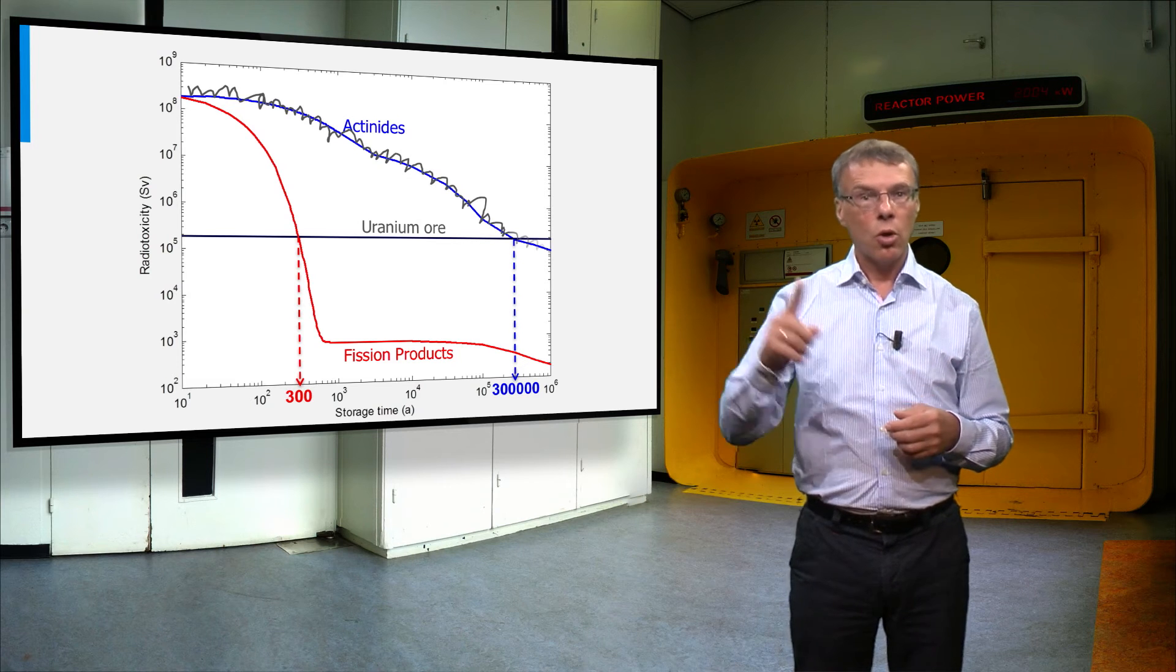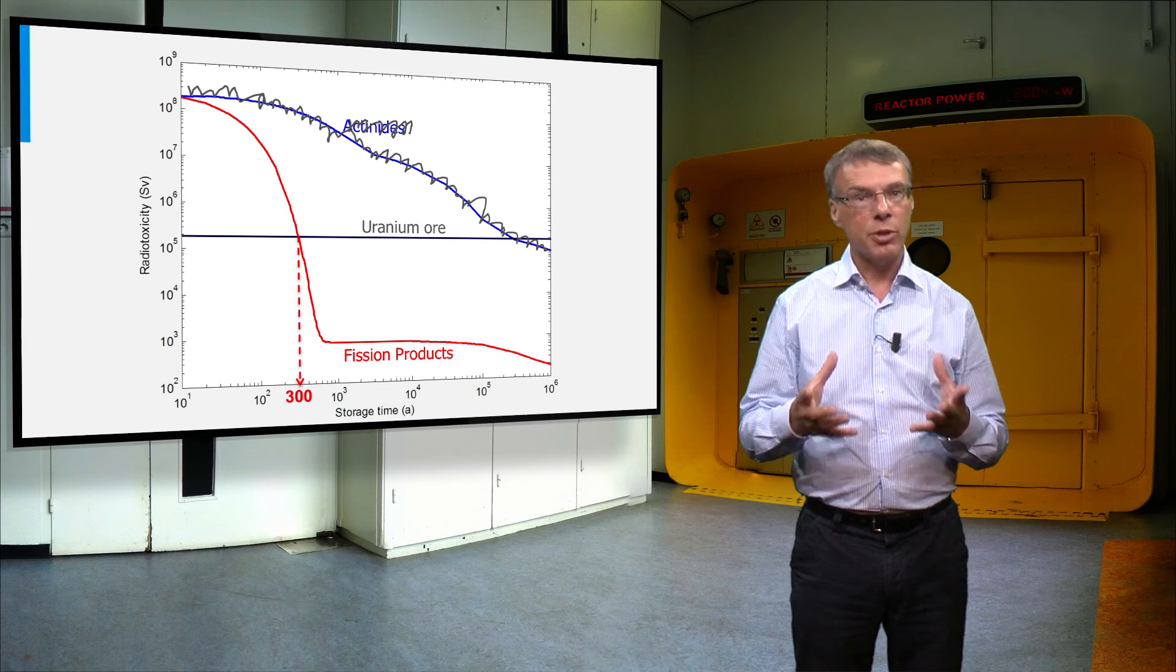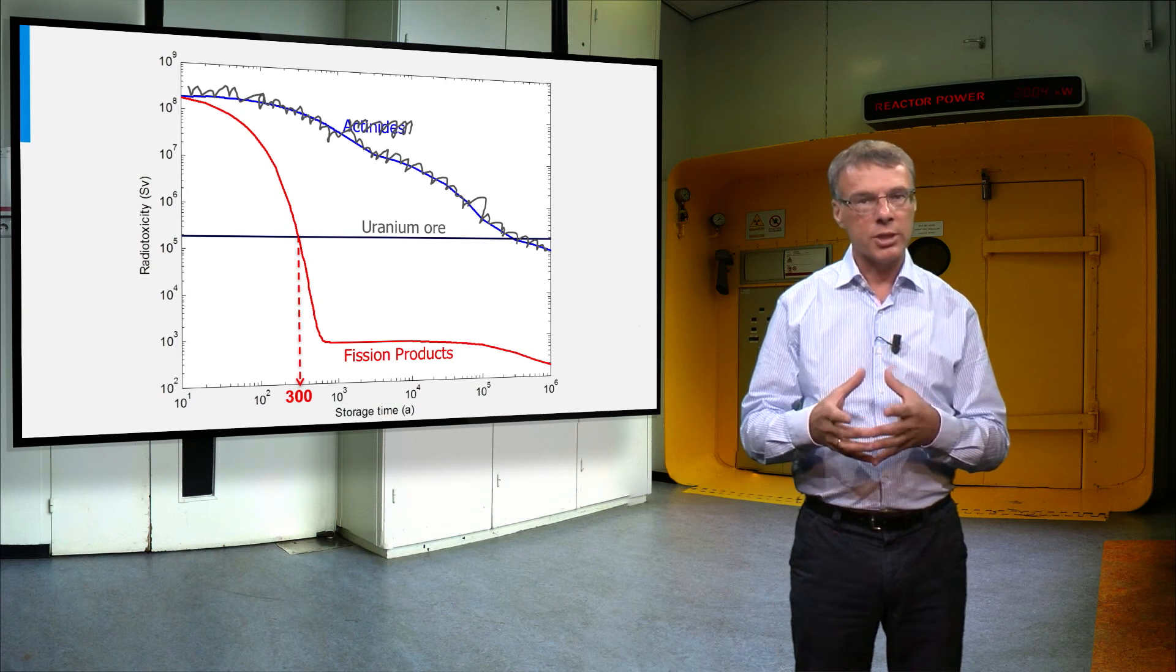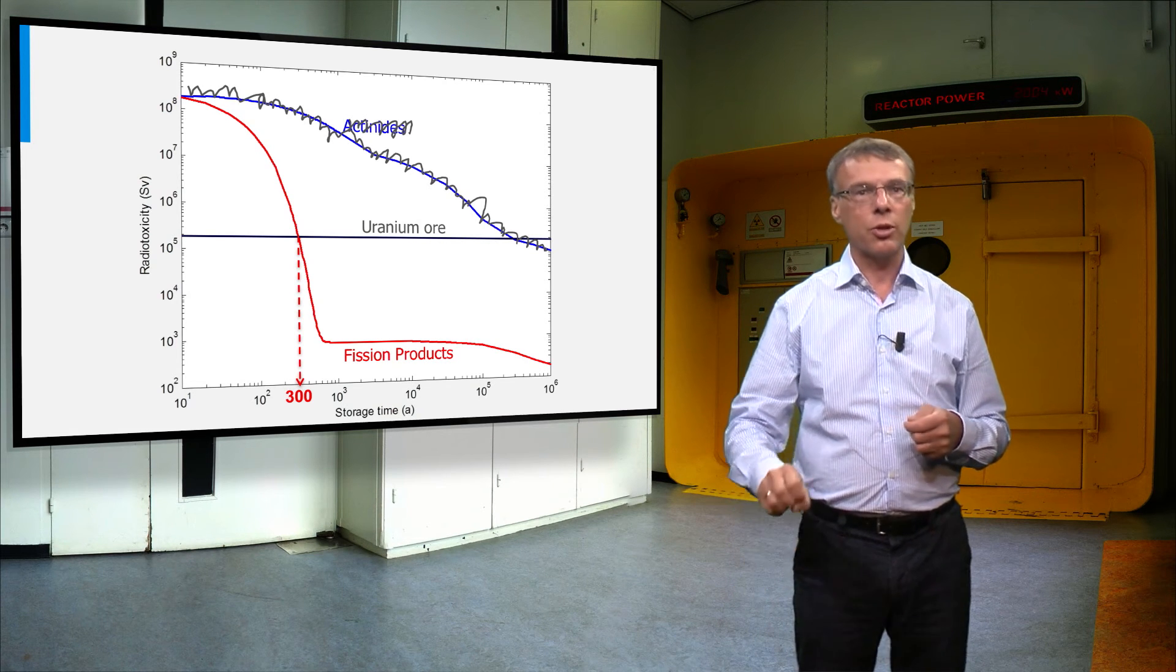In the molten salt reactor, all actinides keep on recycling in the molten salt until they have been fissioned. This means the actinides will not be present in the spent fuel from a molten salt reactor, leading to much shorter lived nuclear waste.